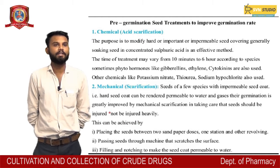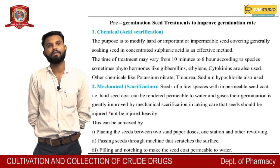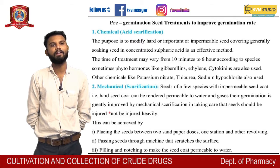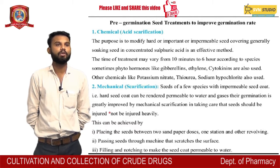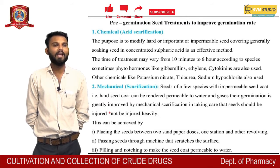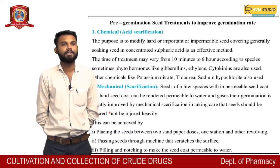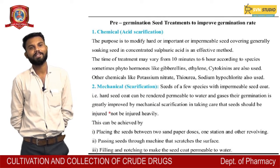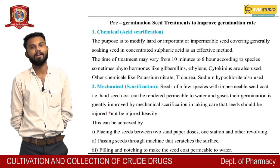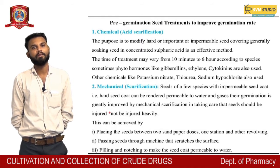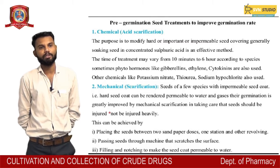Pre-germination seed treatments to improve germination rate: 1. Chemical treatment — the purpose is to modify hard or impermeable seeds. Soaking seeds in concentrated sulfuric acid is an effective method. Treatment time may vary from 10 minutes to 6 hours according to the species. Phytohormones like gibberellin, ethylene, and cytokinin are also used. Other chemicals like potassium nitrate, thiourea, and sodium hypochlorite are also used.